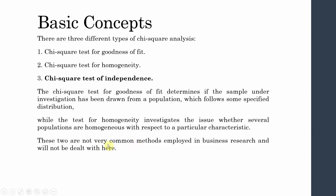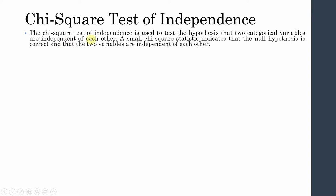What we are going to focus on today is the chi-square test of independence, also called the chi-square test of association. This test is used to test the hypothesis that two categorical variables are independent of each other. A small chi-square statistic indicates the null hypothesis is correct and the two variables are independent, while a higher chi-square statistic indicates they are not independent but rather associated with each other.